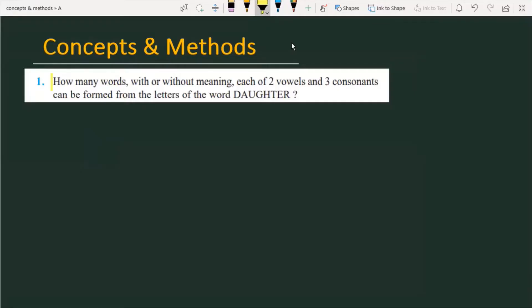The problem is: how many words, with or without meaning, each of two vowels and three consonants, can be formed from the letters of the word DAUGHTER? So we have the word DAUGHTER: D-A-U-G-H-T-E-R. This word is made of some consonants and some vowels.